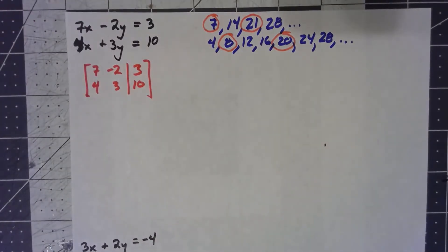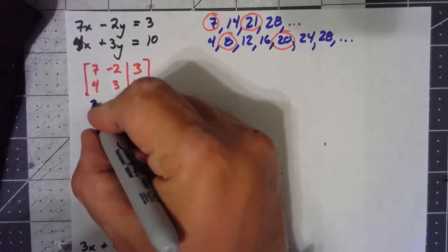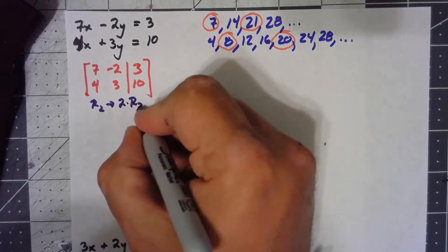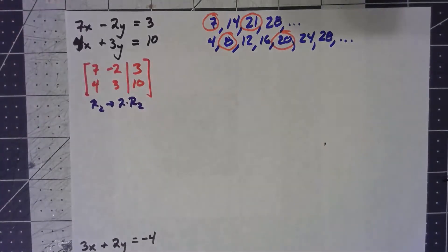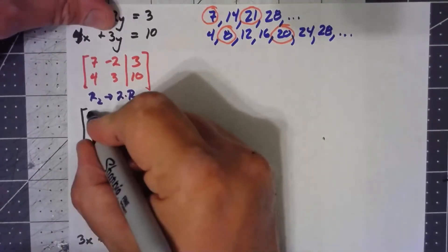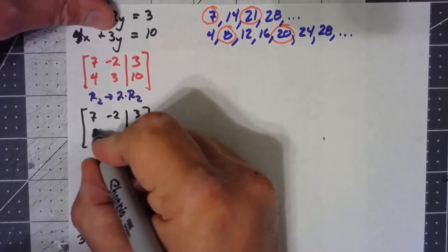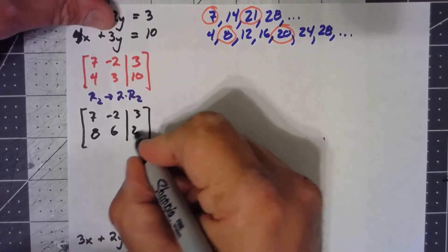Now that 4 needs to be an 8, so I'll just multiply the second row by 2. So I've got 7, negative 2, 3, and then that becomes an 8, a 6, and a 20.